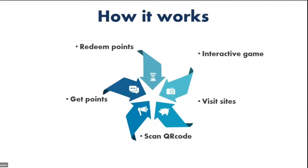How it works: it is an interactive game that uses a map. With this map, a person can get site suggestions around their geolocation, and then they visit these sites. Once they visit, they are able to scan the QR code at the site to show that they are on the premises. They will then be able to get points and over time accumulate a certain number of points.